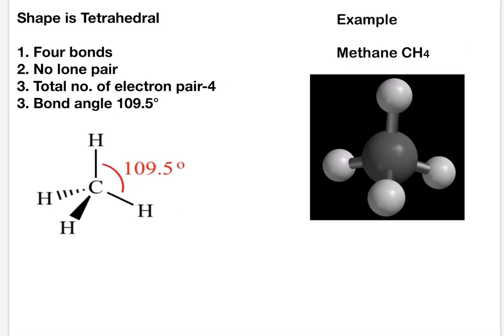Let's go to the next example. Shape is tetrahedral, that is methane CH4. Methane has four bonding pairs of electrons surrounding the central carbon atom. The equal repulsive forces of each bonding pair of electrons results in the structure with all HCH bond angles being 109.5 degrees and therefore we call this a tetrahedral structure.